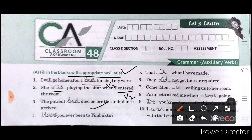Third one: The patient had died before the ambulance arrived. Fourth one: Have you ever been to Timbuktu? In the fifth sentence: That's what I have made. In the sixth sentence: They did not get the car repaired — according to verb second form, we use 'did' here.